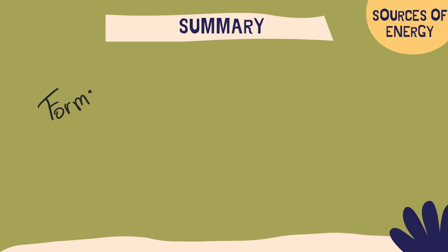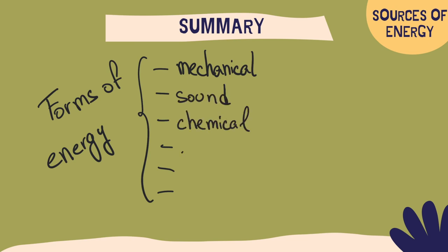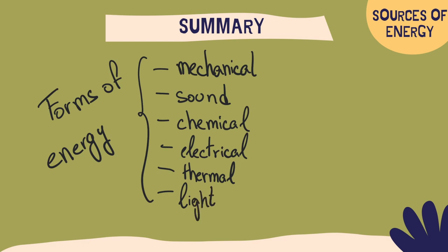Summarizing, we need to know that there are six forms of energy: mechanical, sound, chemical, electrical, thermal and light energy. And we can transform energy. For example, we can transform electrical energy into thermal energy, sound energy or light energy, for instance.